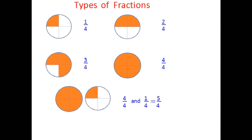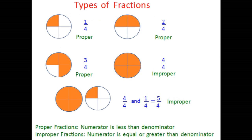Looking at these fractions, in the first three examples the fraction represents something less than the whole — these are called proper fractions. Proper fractions are those where the numerator is less than the denominator. Improper fractions are those where the numerator is either equal to or greater than the denominator.